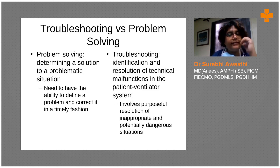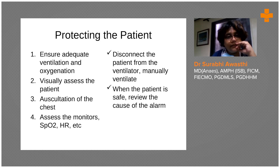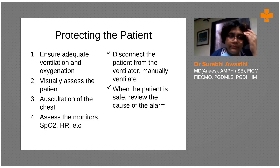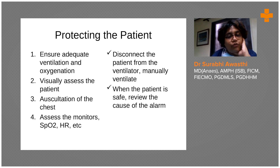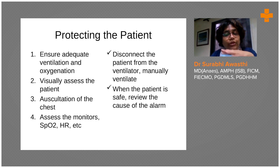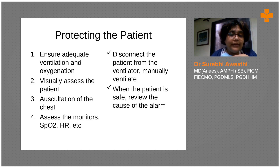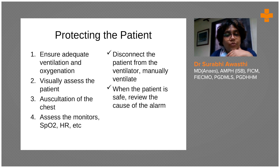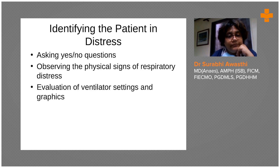When discussing problem solving and troubleshooting, before you do anything for the patient or when ventilator alarms occur, you need to first protect your patient. Ensure oxygenation first - visually assess the patient and auscultate his chest, assess the monitors, and after doing all that, disconnect the patient from the ventilator and manually ventilate him, either with the Bain circuit or with the Ambu bag. Once the patient is okay and safe, then you can go back to the ventilator and review the alarms.